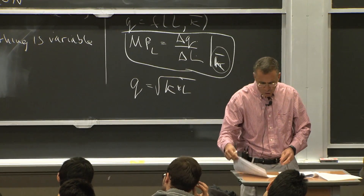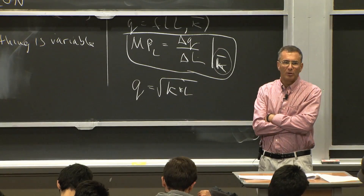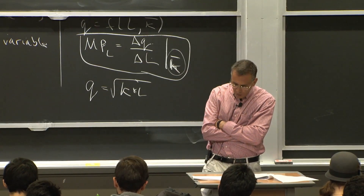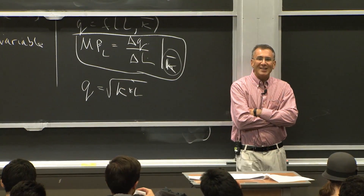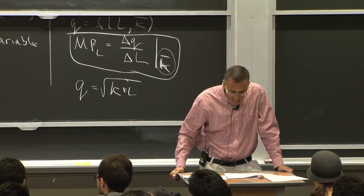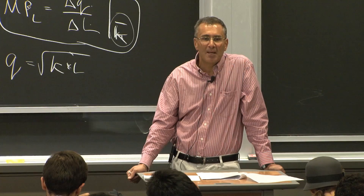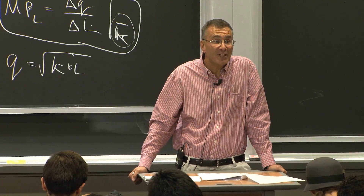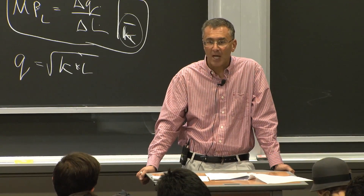In Figure 8-2a, we talk about inputs that are perfectly substitutable — inputs where you're indifferent between one and the other. We could label the x-axis 'Harvard graduates' and the y-axis 'Beanie Babies.' These inputs are perfectly substitutable, which means we have a linear isoquant. All you care about is the sum of the two inputs, not one versus the other.